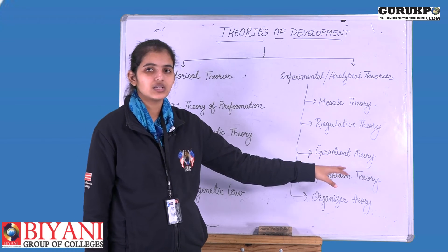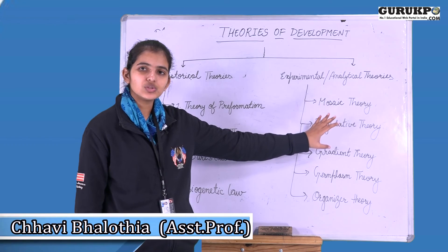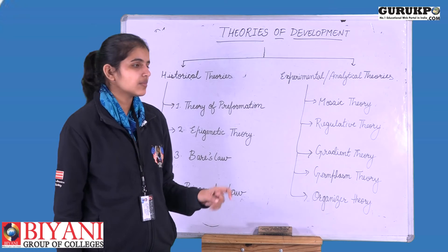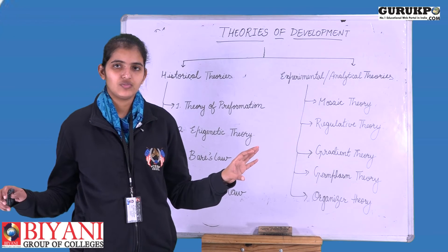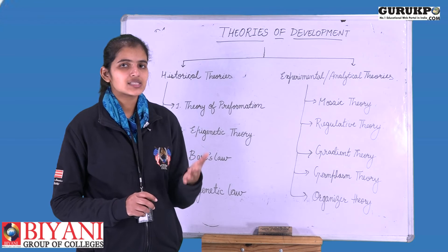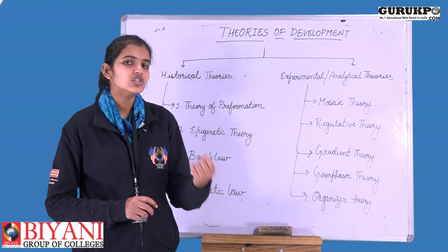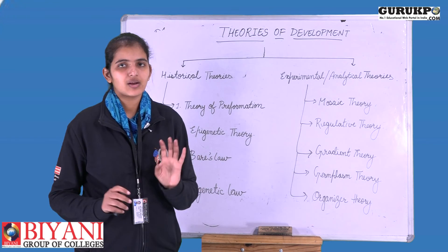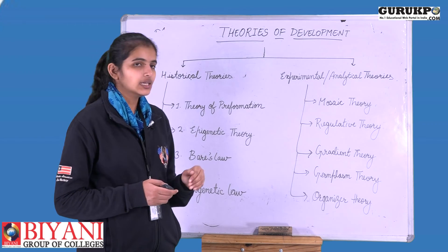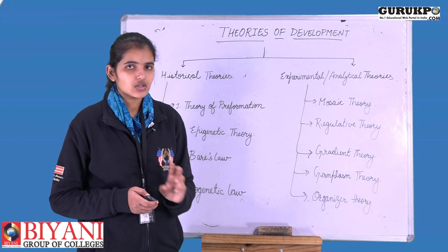Next came the gradient theory, which is related to both mosaic and regulative theories. The gradient theory states that yes, regulation exists, but there is also a gradient specifying how much concentration of a specific cell, tissue, or chemical is needed in the body. This gradient determines the anterior, posterior, dorsal, and ventral surfaces of the body — specifying where and how structures will develop.